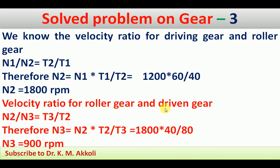Next, we apply the velocity ratio for the roller gear and the driven gear: N2 by N3 equals T3 by T2. Here N2 is the roller gear speed, N3 is the driven gear speed, T3 is the number of teeth on the driven gear, and T2 is the number of teeth on the roller gear. Simplifying gives N3 equals N2 times T2 by T3. Substituting the values calculated previously, the speed of the driven gear N3 is 900 RPM.